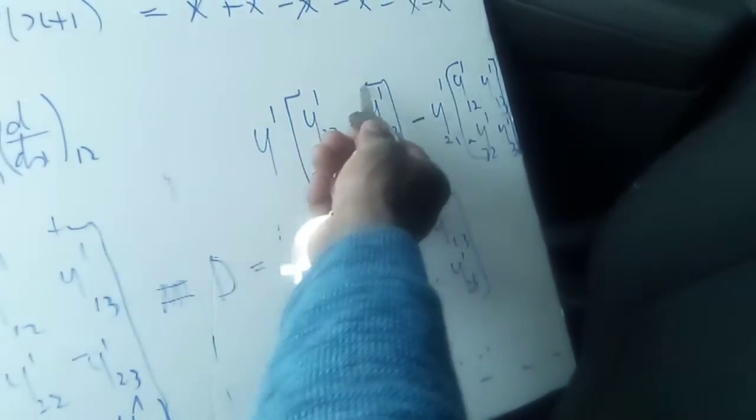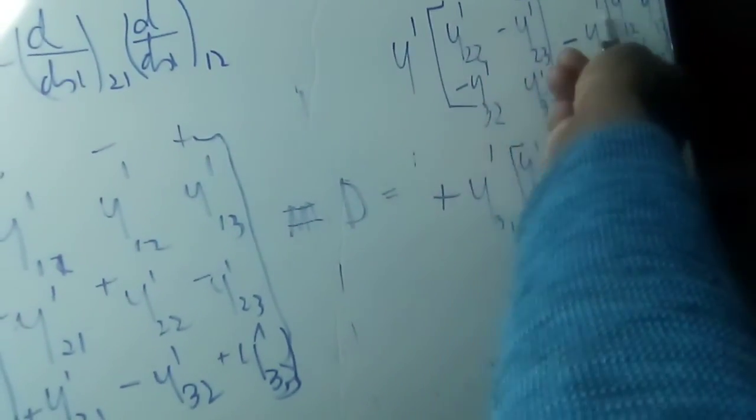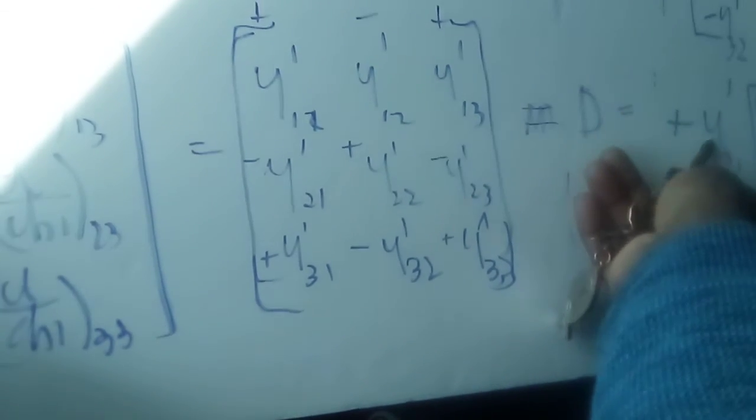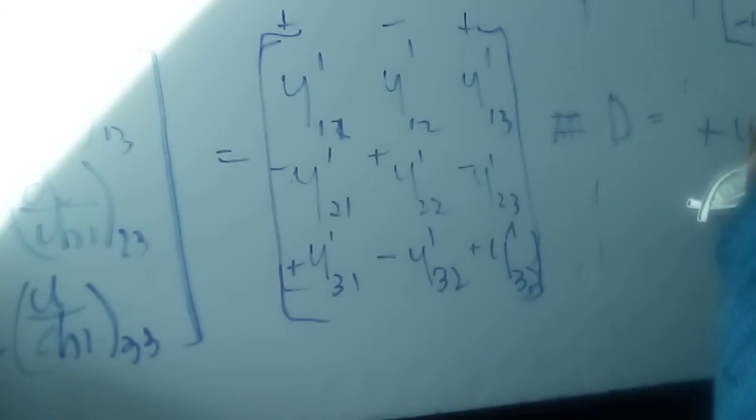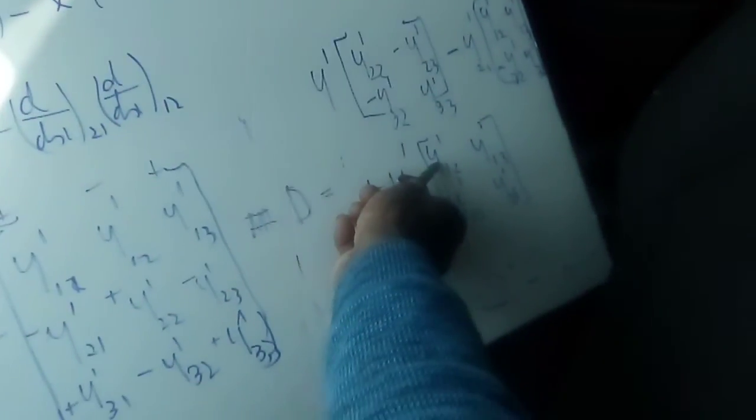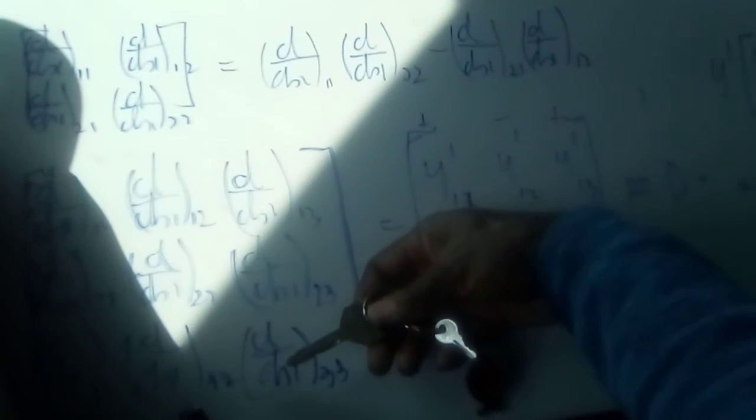And we could go ahead and find the determinant of this three by three by putting y prime into this two by two, minus y prime into this two by two, plus y prime into this three-one times this two by two. Because we know to find the determinant of a two by two, we did it up here. So with this we are well on our way to finding the determinant of this three by three matrix using differential elements. In other words, we are using differentiation with respect to x, dy by dx, as each element of the three by three.